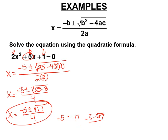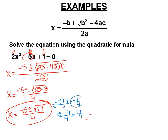What does that mean? The square root of 17 is around the square root of 16, or 4. So this is approximately negative 5 plus 4 over 4, which is negative one-fourth. Or it's negative 5 minus 4 over 4, which is negative nine-fourths. So that's approximately where they would be. But they are actually irrational. You don't need to do this part — that was just so you understand what that's about.